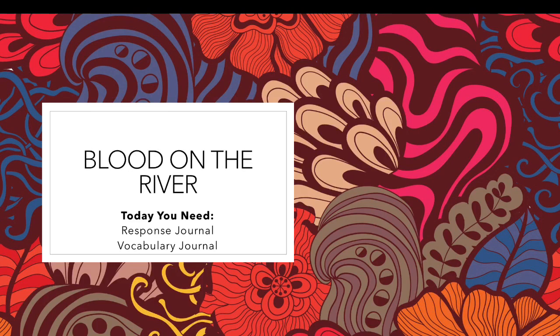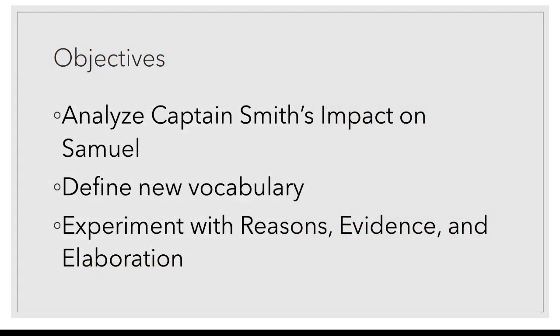Welcome back, kids. We're going to pick up with Lesson 11 for Blood on the River. Last week we talked about Reverend Hunt's impact on Samuel, and this week we're going to talk about Captain Smith's impact on him.